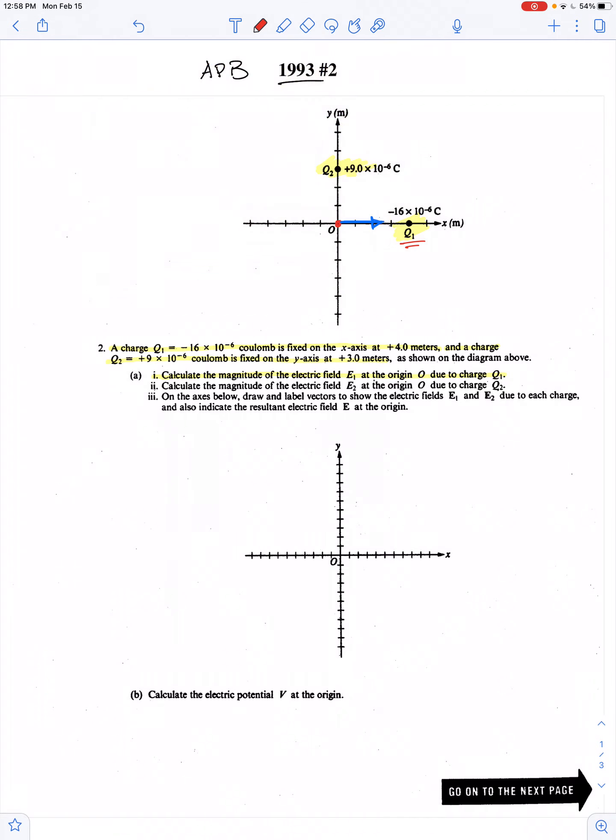And the other charge, Q2, being positive, would repel our test charge. So we can represent both of these as vectors. We've got to calculate the magnitudes. So we'll call this E1, and the one pointing down is E2.